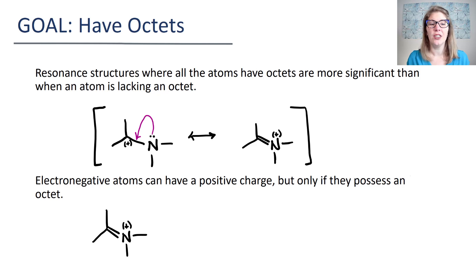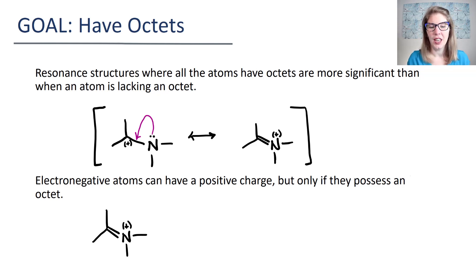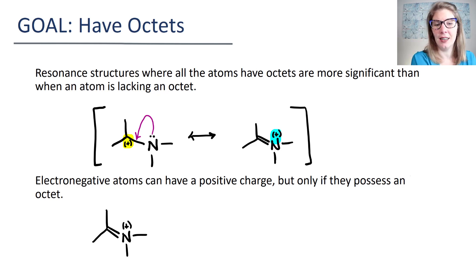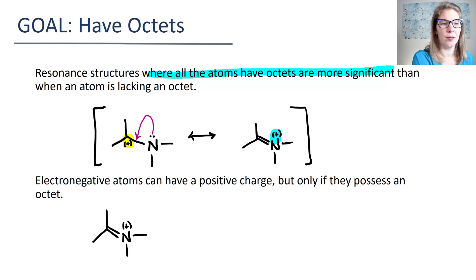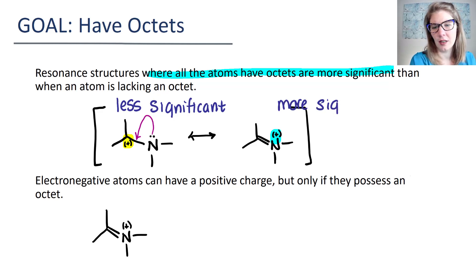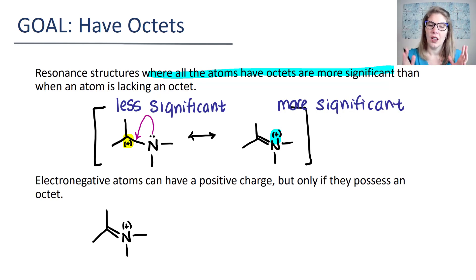Our next goal is to have octets for atoms. It's not always going to be possible to have octets for atoms, but this helps us decide when we have two structures which one's more significant than another. Here I have a resonance structure set where one structure is showing a carbon that has a positive charge and over here a nitrogen that has a positive charge. Resonance structures where all of the atoms have an octet are going to be more significant than when you have an atom that's lacking an octet. This means the first structure is less significant than the second structure, which is more significant.